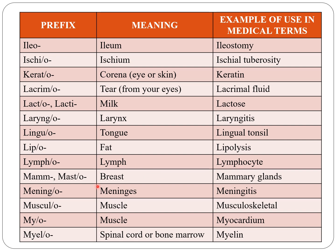Mamo or masto indicates breast, as in mammary glands. Meningo indicates meninges, as in meningitis. Musculo and myo both indicate muscle, as in musculoskeletal and myocardium. Myelo indicates spinal cord or bone marrow, as in myelin.